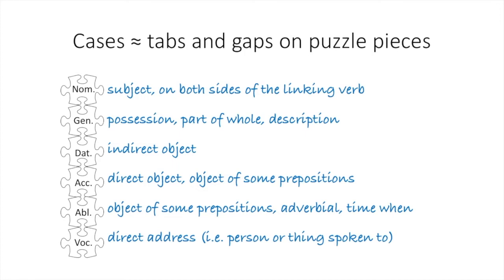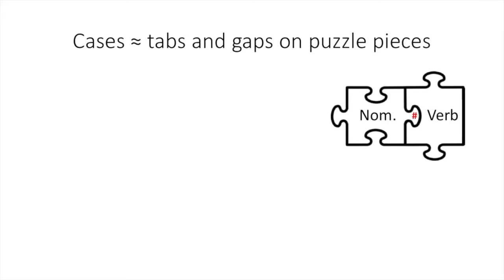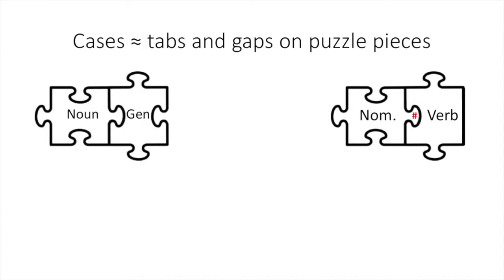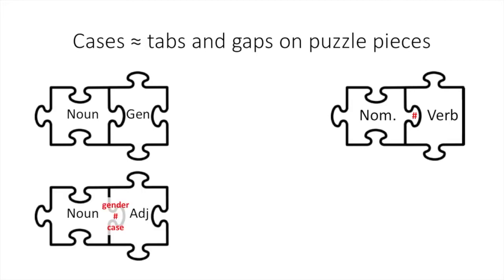As I said before, there are certain clues that help you recognize that certain words must go together. First, the nominative subject and the verb must have the same number. Second, since a genitive noun possesses or describes another noun, or it is the whole of which another noun is a part, a genitive noun must relate to another noun. It usually comes after the word it modifies or limits. Similarly, adjectives will usually follow the noun they modify.